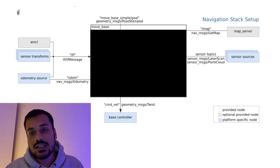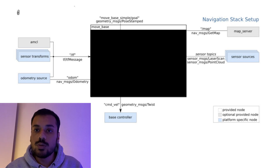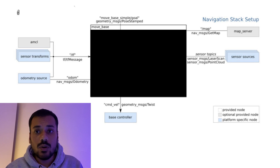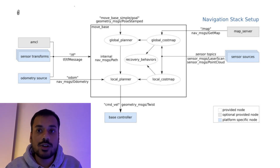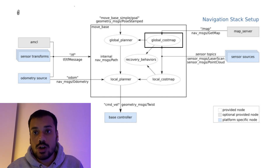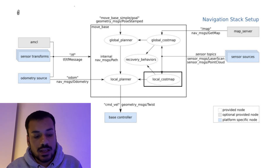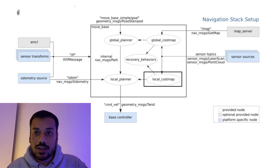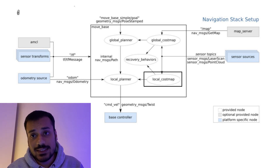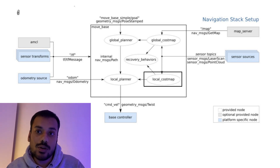Essentially, MoveBase takes in all this information and based on its internal global planner and local planner, it creates local and global paths. The global cost map is for full-length path planning — it may or may not use a map and is augmented with real-time sensor information about obstacles. The local cost map is only based on information in the vicinity of the robot — whatever the robot can currently see — and is used by the local planner to plan local paths.